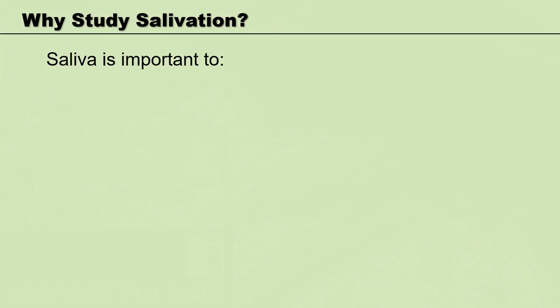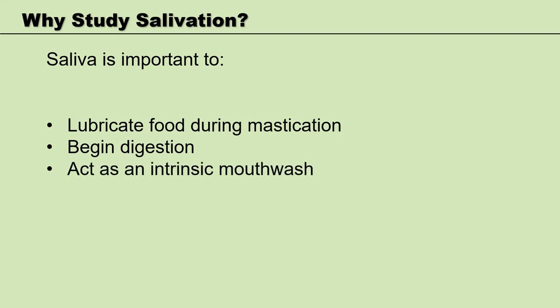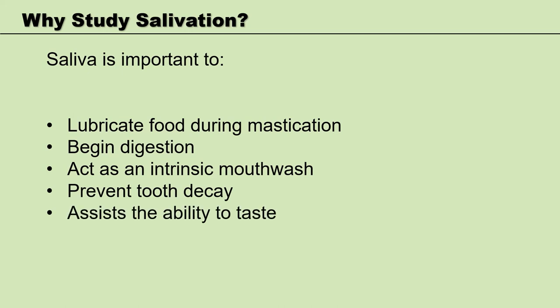So why are we focusing on the anatomy of salivation? Well, salivation can give us a key indication of a person's health, and in some illnesses the production of saliva can be affected. Saliva helps to lubricate food for swallowing, it begins the process of chemical digestion, it acts as an antimicrobial mouthwash preventing tooth decay and rebalancing the pH of the oral cavity, and it increases our ability to taste, preventing us from ingesting poisonous food or encouraging us to eat.